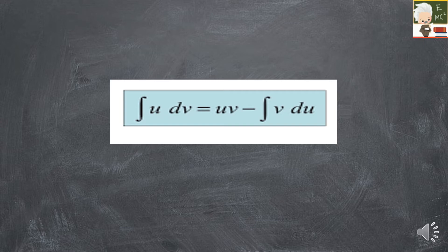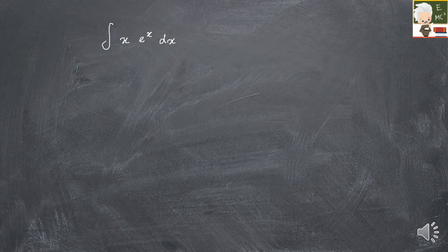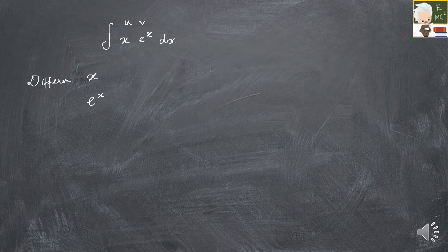Let's look at a problem: integral of x·eˣ dx. We set x as U and eˣ as dV. The first term is differentiated and the other term is integrated. If x is differentiated, it gives 1.